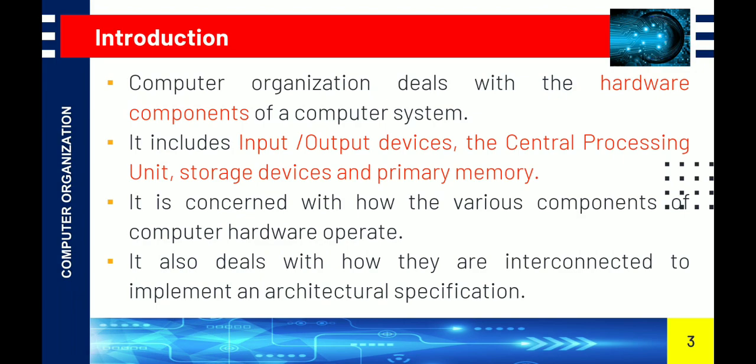Computer Organization covers hardware components like input devices, output devices, central processing unit, and memory devices. It also covers the interconnection and communication between those devices — how one device communicates with another, and how cables and connections are used.